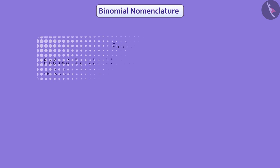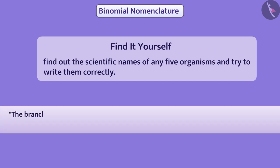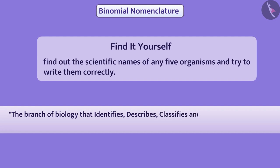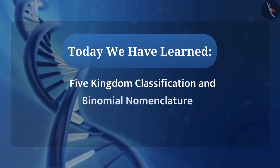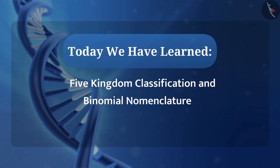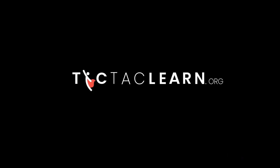Here is a task for you: find out the scientific names of any five organisms and try to write them correctly. The branch of biology that identifies, describes, classifies, and names organisms is called taxonomy. Today we have learned five kingdom classification and binomial nomenclature.